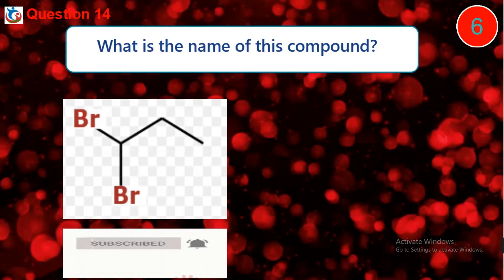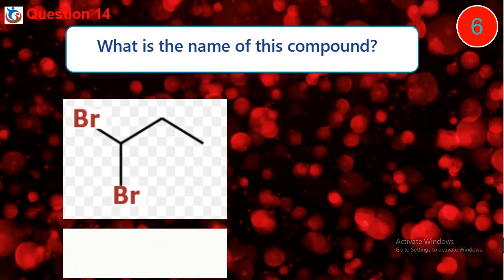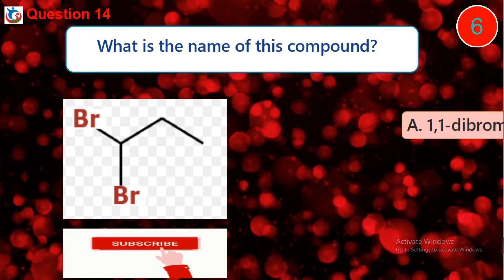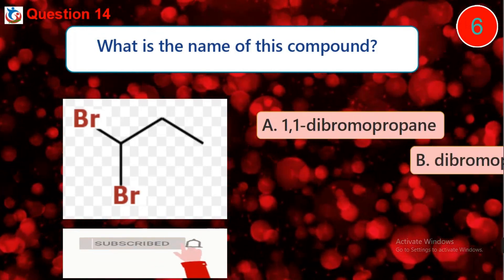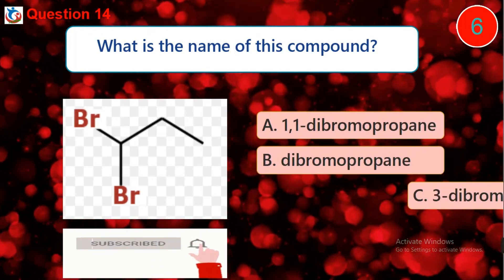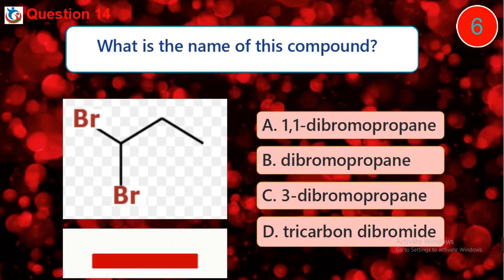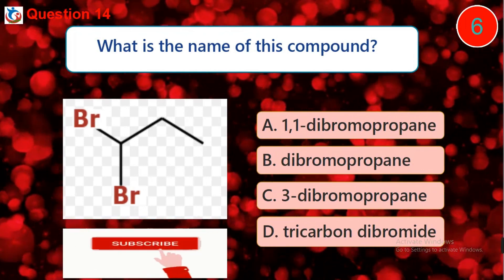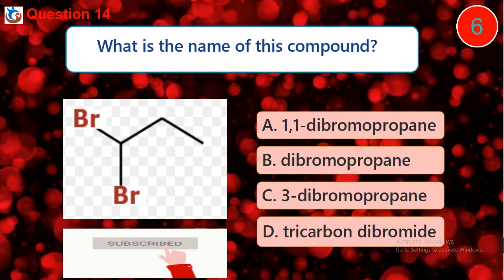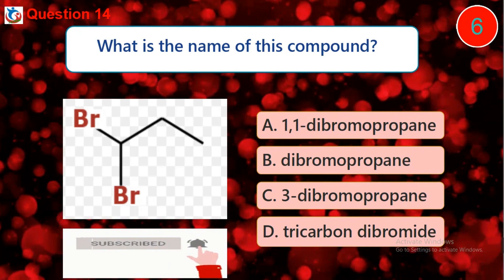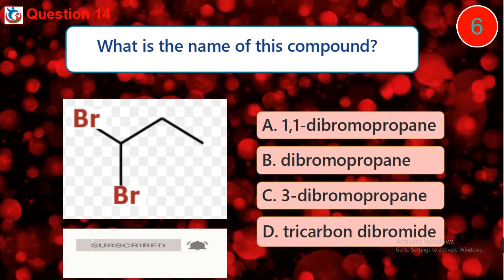Question 14. What is the name of this compound? A. 1,1-dibromopropene. B. Dibromopropene. C. 3,3-dibromopropene. D. Tricarbon dibromide.